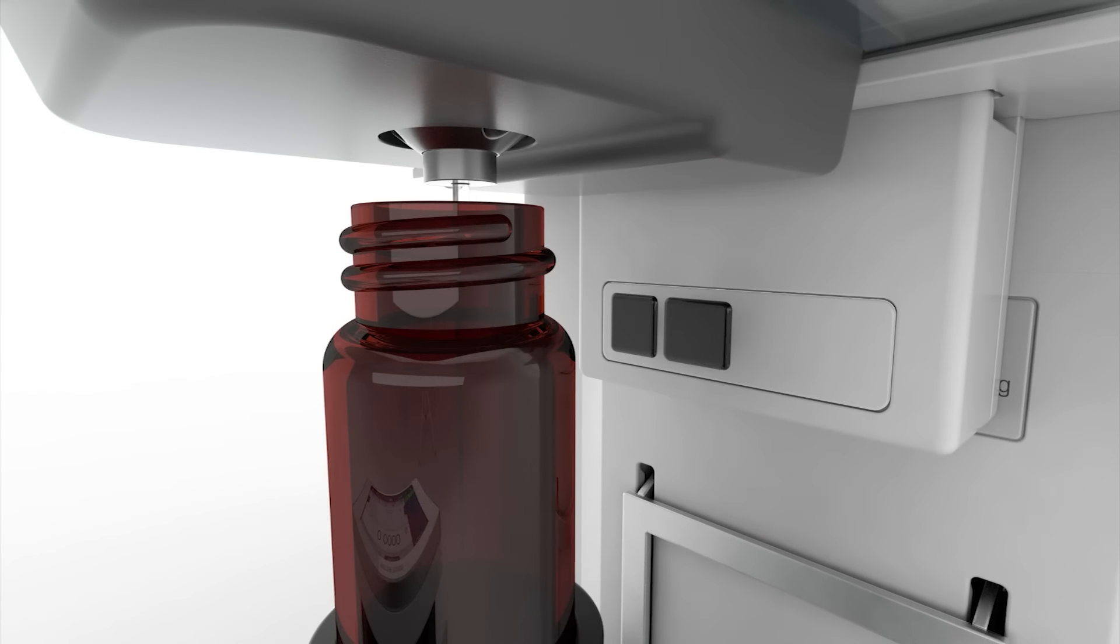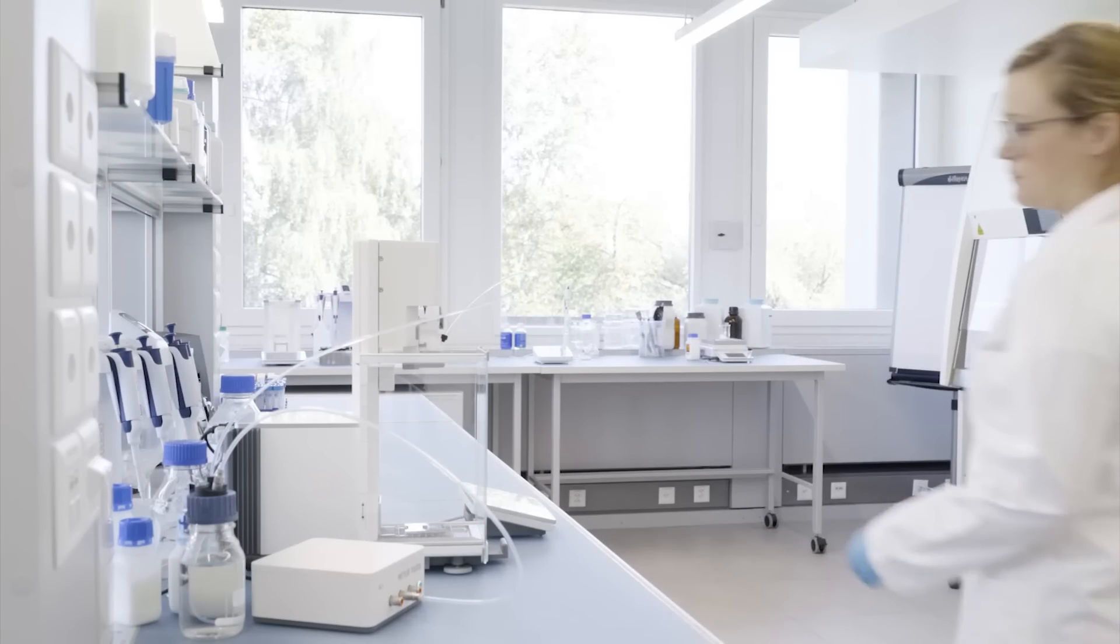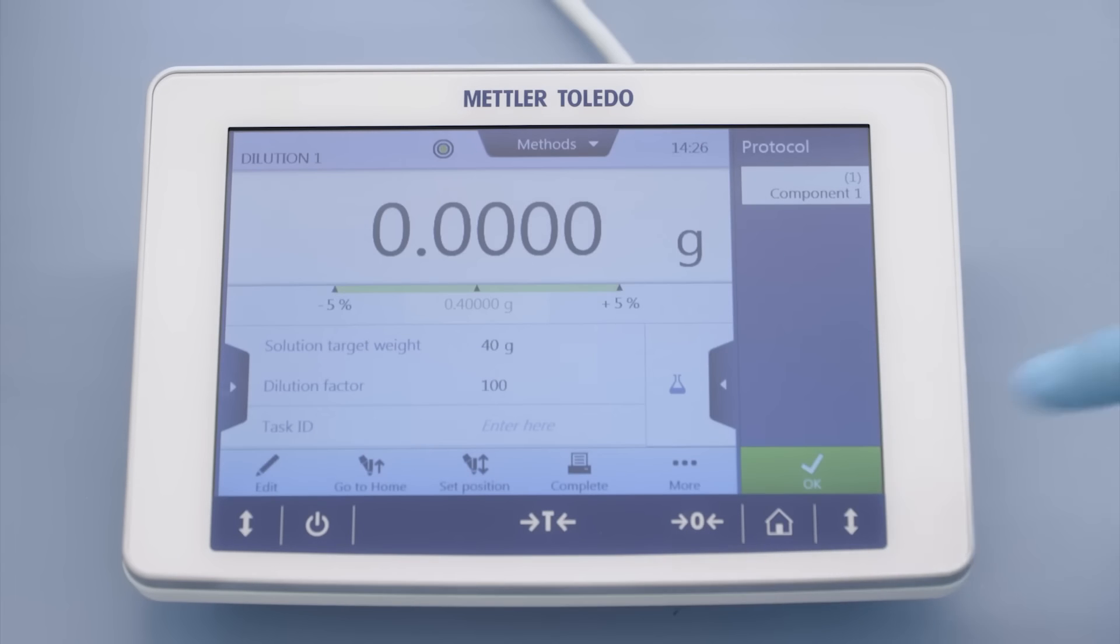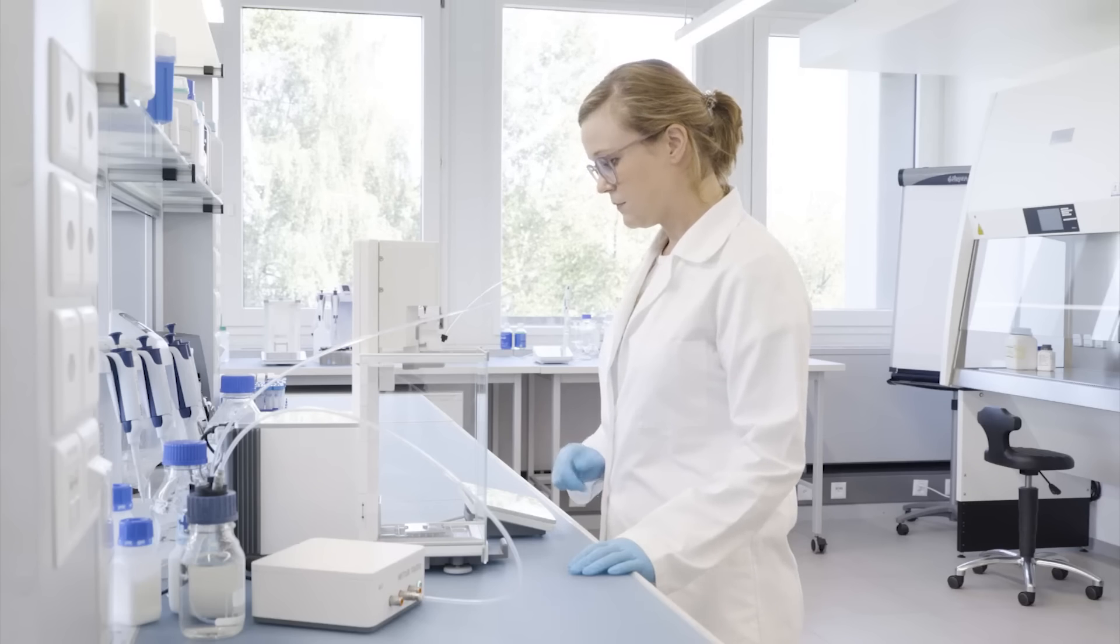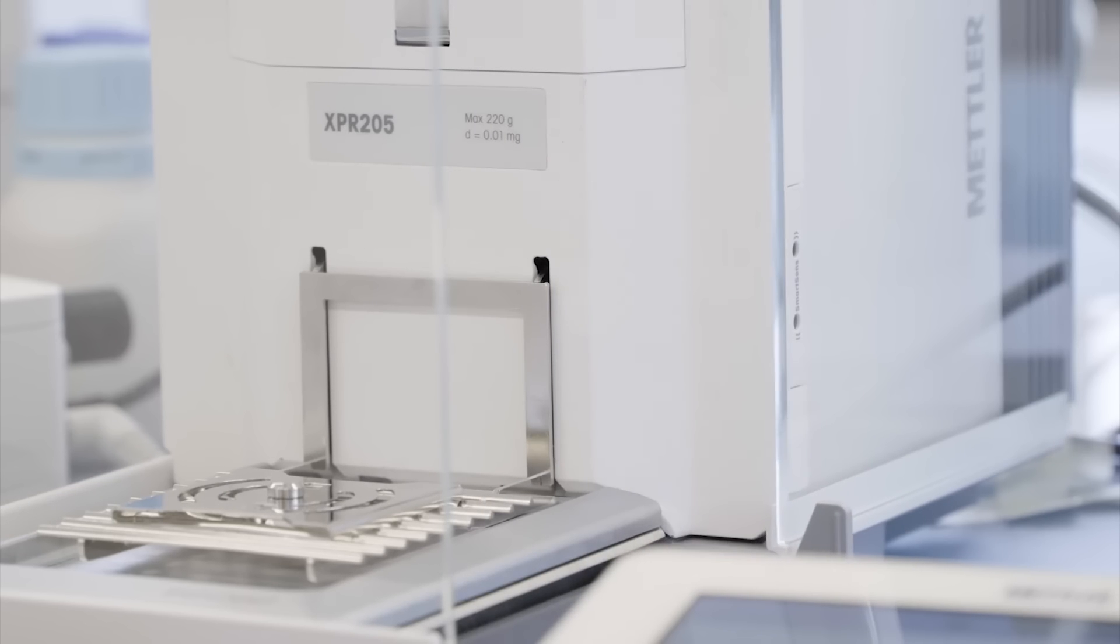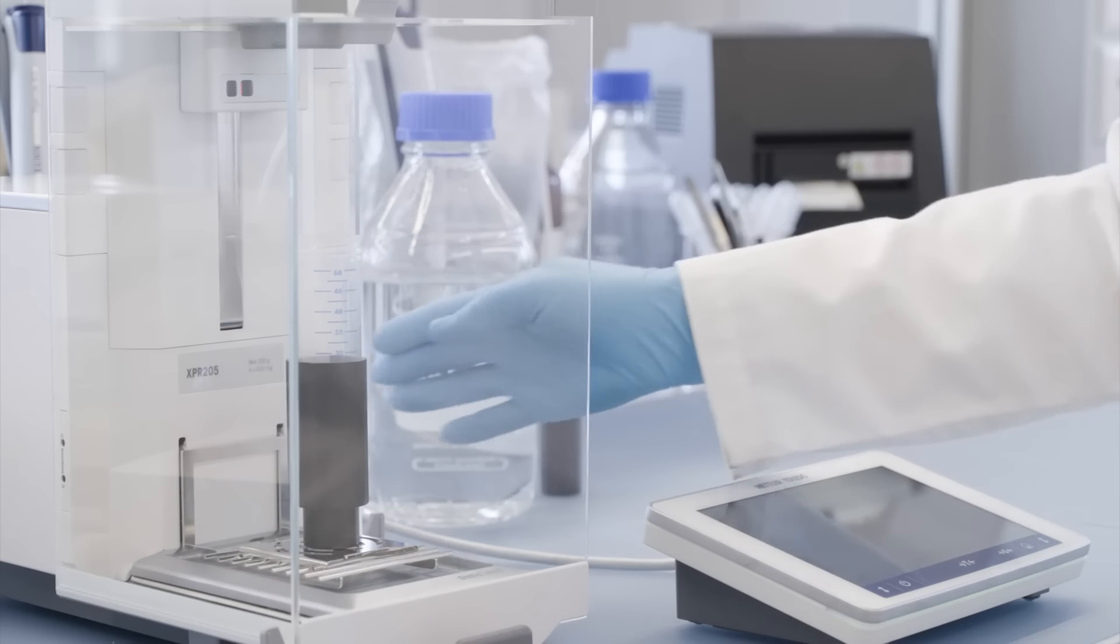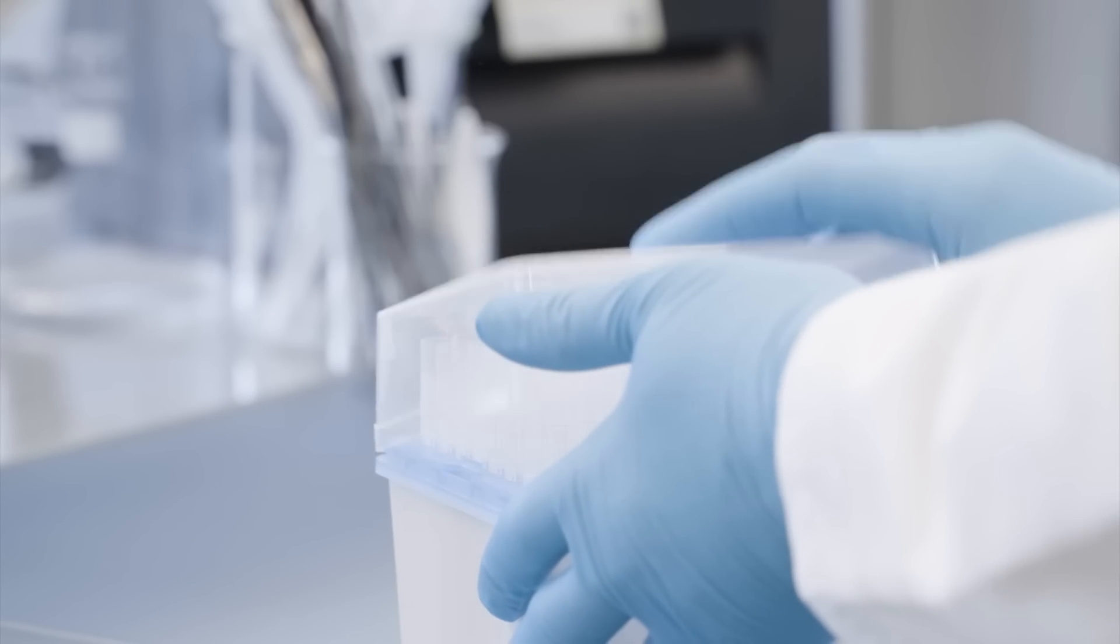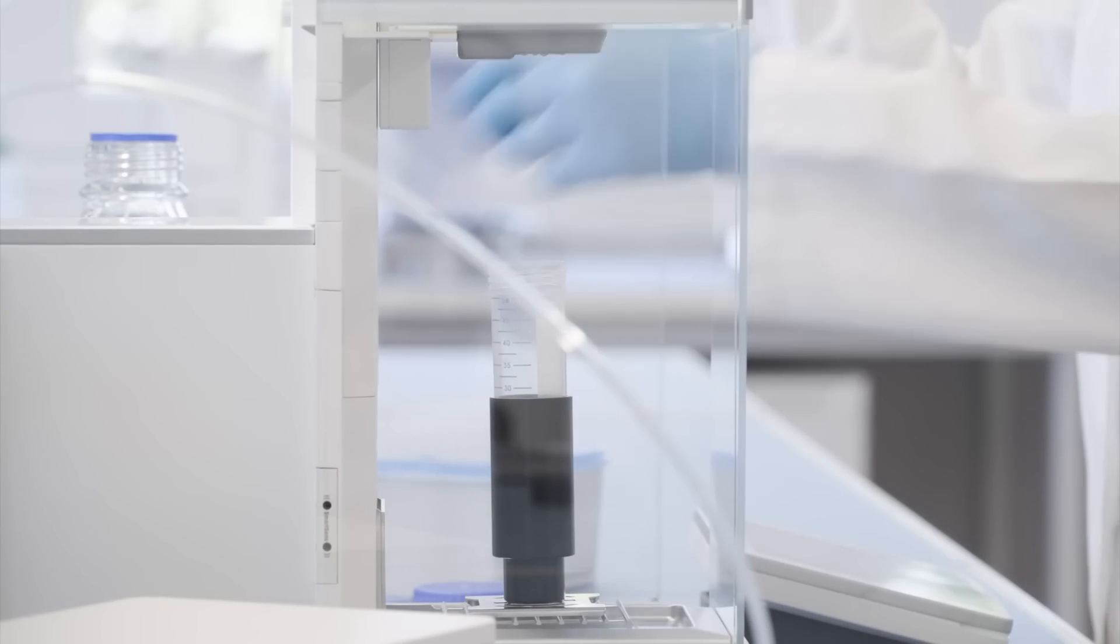The preparation of solutions with accurate concentrations is an essential starting point for many analyses. With the XPR Automatic Balance, you simply start a method on the balance terminal, define the target volume and the concentration or dilution factor, place the container in the weighing chamber, and pipette an aliquot of your concentrate.